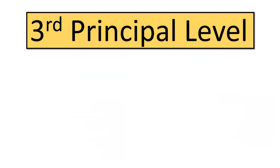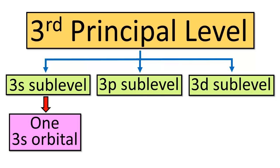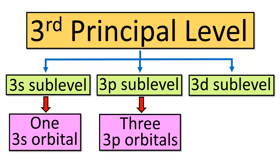In the third principal level, we've got three sublevels — s, p, and d. In the s sublevel, we have one 3s orbital; in the p sublevel, three 3p orbitals; and in the d sublevel, five 3d orbitals. All of these sublevels and orbitals within a principal shell are related to the possible values of the azimuthal quantum number and the magnetic quantum number for a given principal quantum number.